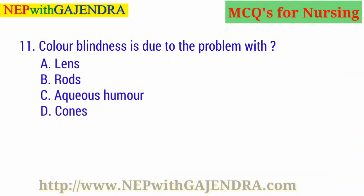Color blindness is due to the problem with: A. Lens. B. Rods. C. Aqueous humor. D. Cones. The right answer is D: Cones.